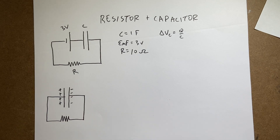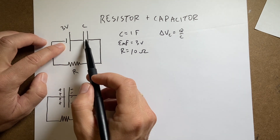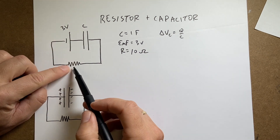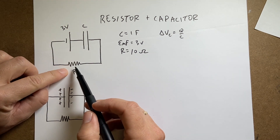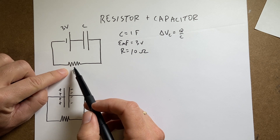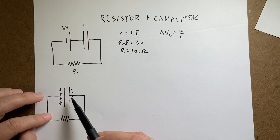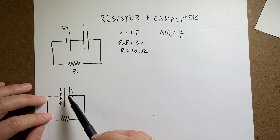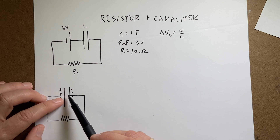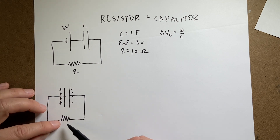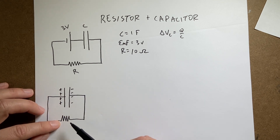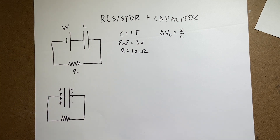So the brightness is an indication of the amount of electric current going through there. Eventually the current is so low the bulb doesn't light up. Now I'm going to remove the battery and connect just the capacitor to the light bulb after the capacitor has been charged — the light bulb starts very bright again and then gets dimmer.